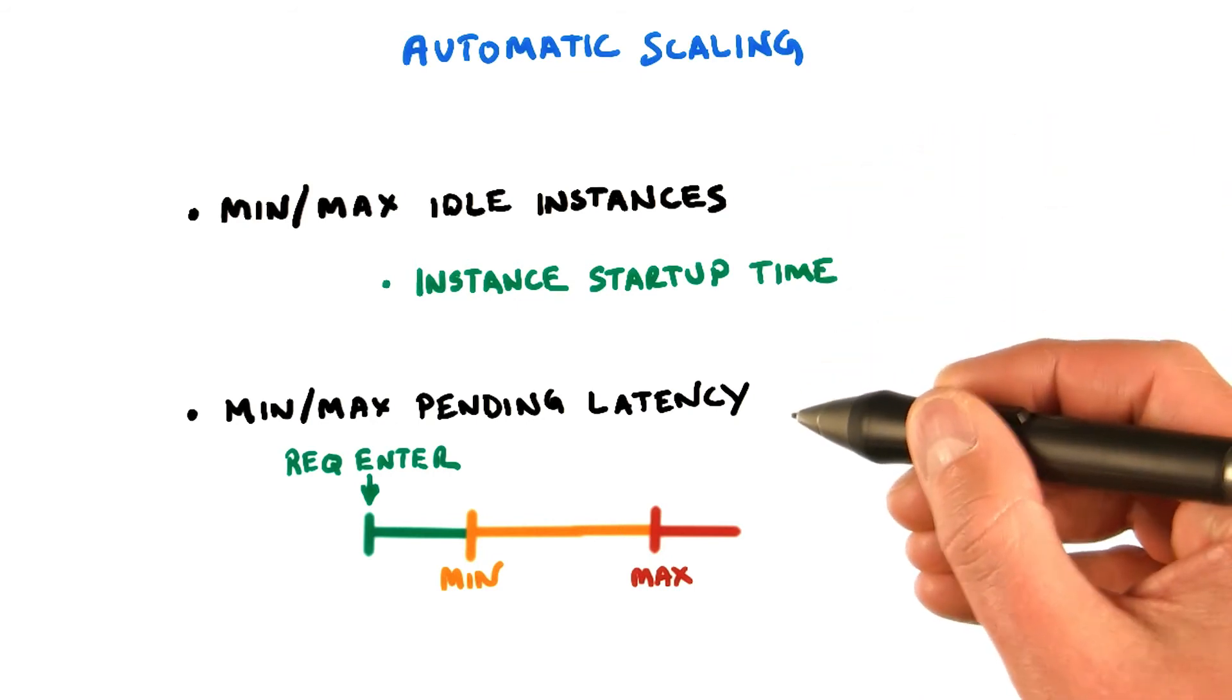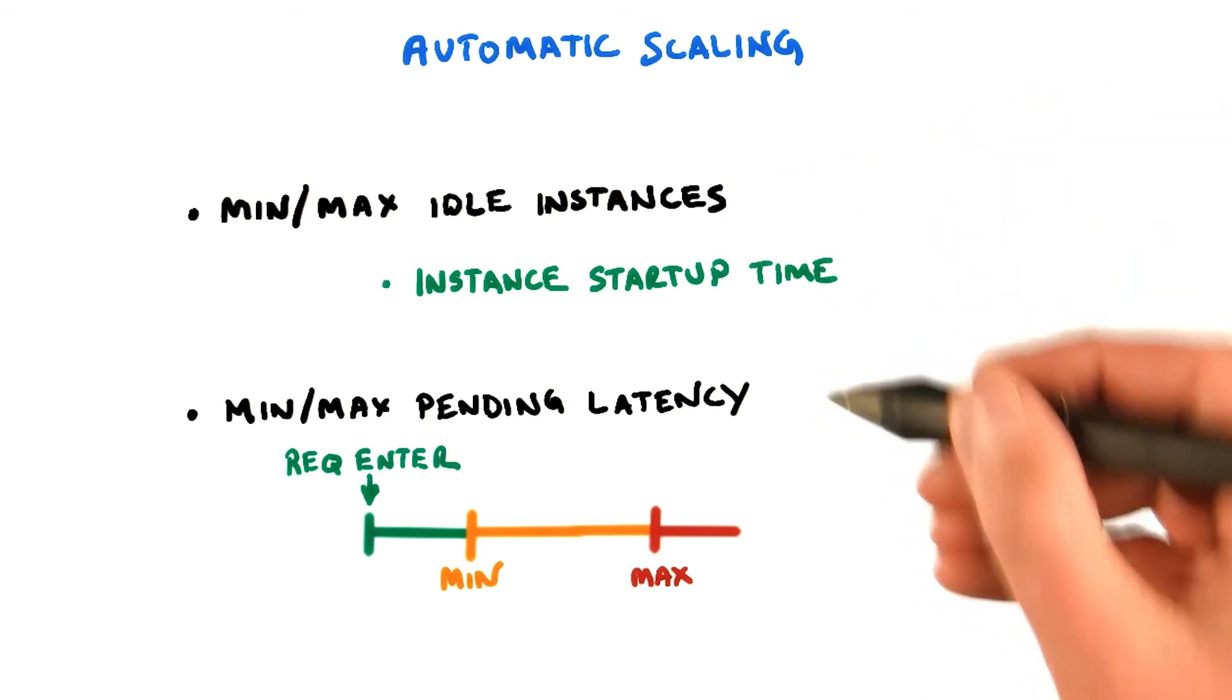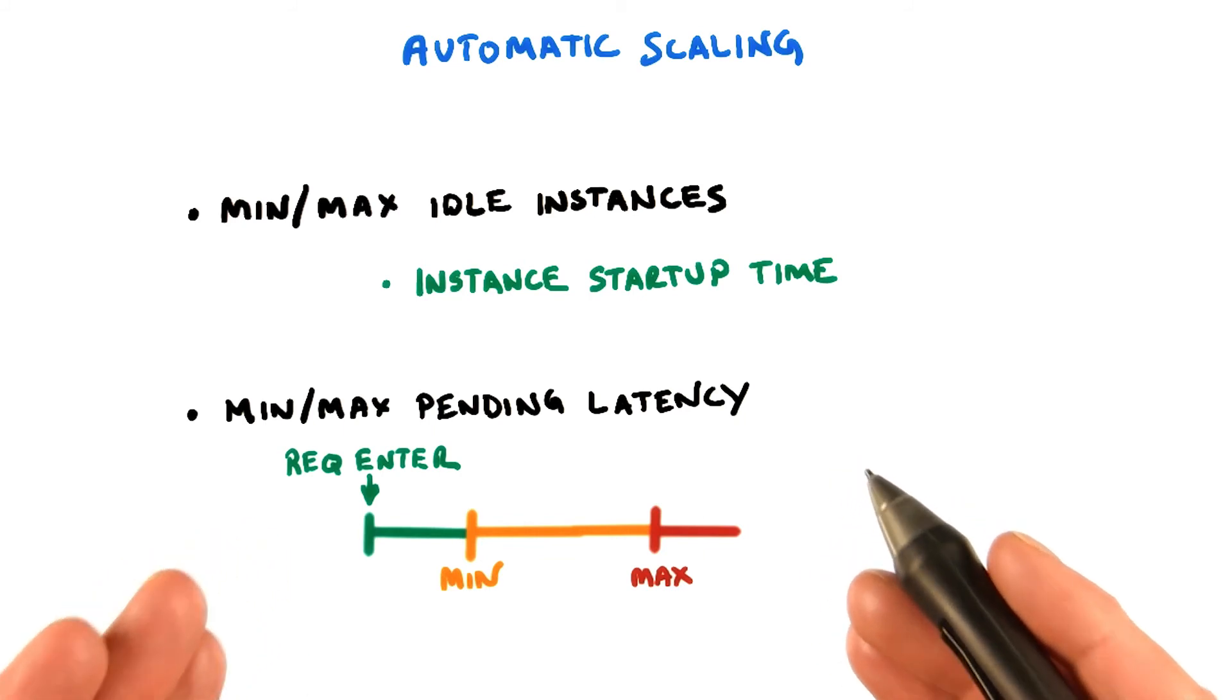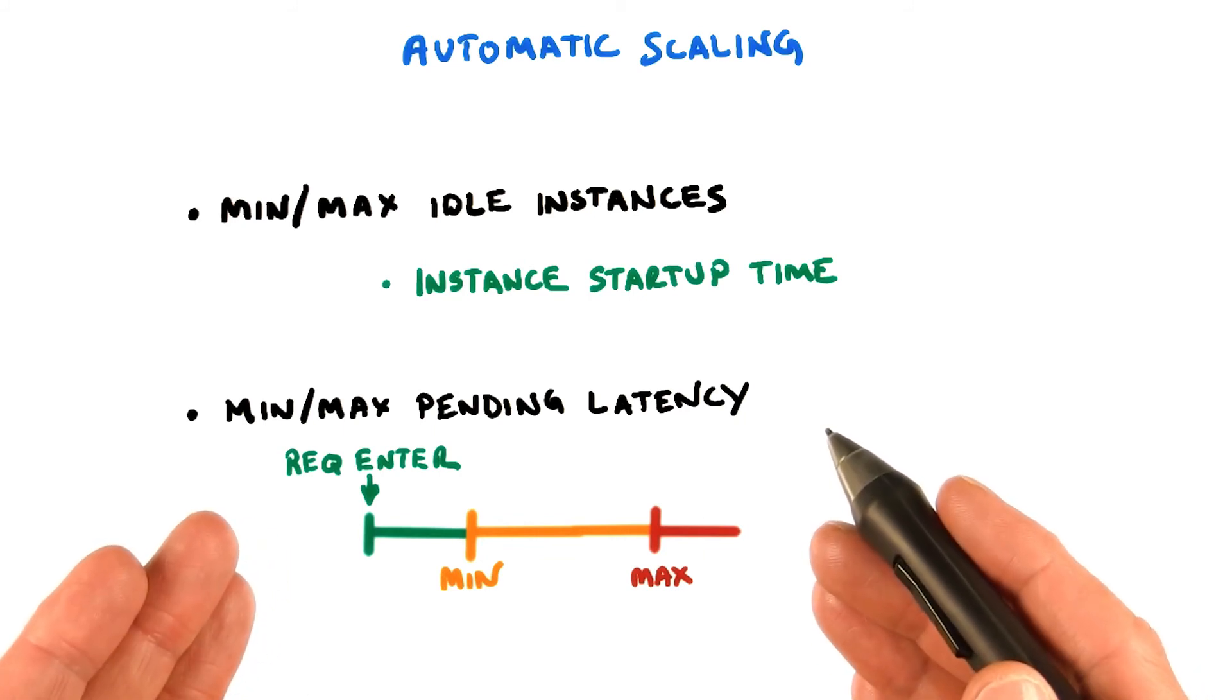Rather than specifying a number for these four parameters, you can set them all to automatic. In such case, App Engine will set them according to a dynamic analysis it performs.